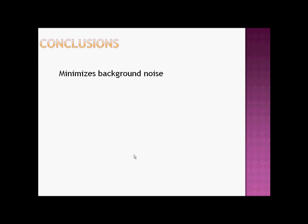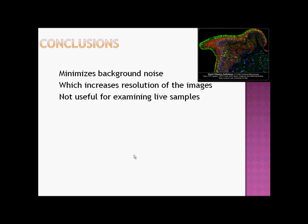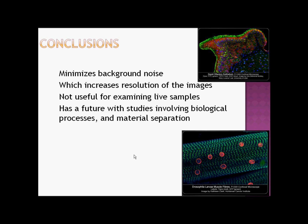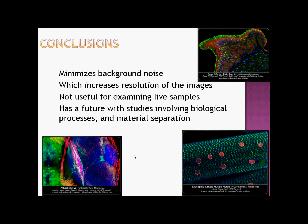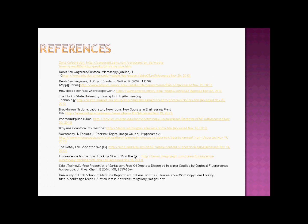Conclusion. The confocal fluorescence microscope is an important instrument used in research due to its ability to minimize background noise. Its unique pinhole screen filters the wavelength necessary for detection. The resolution is an upgrade from the traditional fluorescence microscope, but it is not the most useful microscope when examining live samples. These qualities give CFM a promising future in studies involving interfaces between two liquids requiring further study in biological processes and material separation. And it also makes really awesome images. These are my references — thank you for your time.